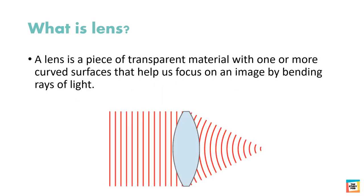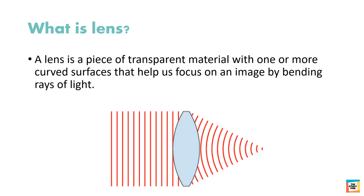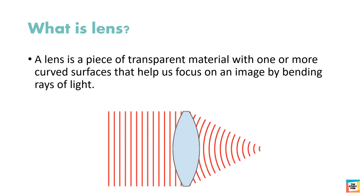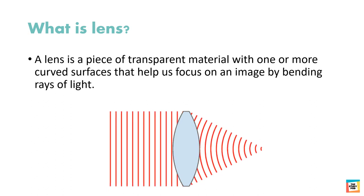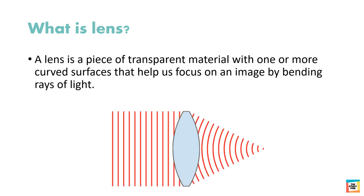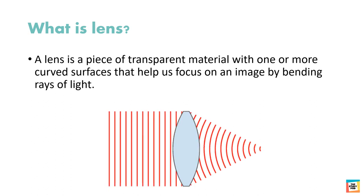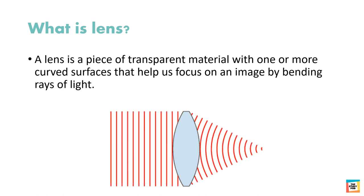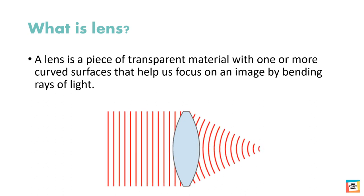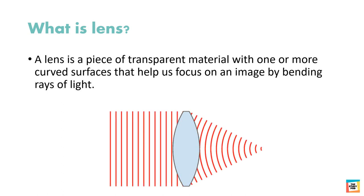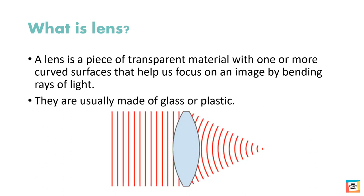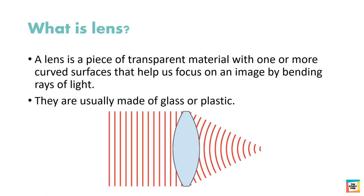A lens is a piece of transparent material with one or more curved surfaces that help us focus on an image by bending rays of light. They are usually made of glass or plastic.